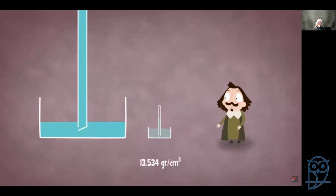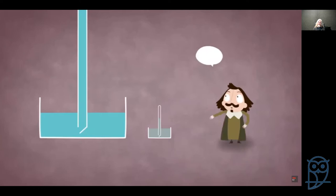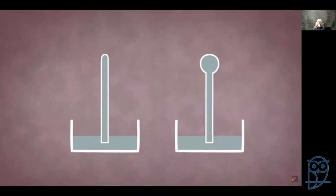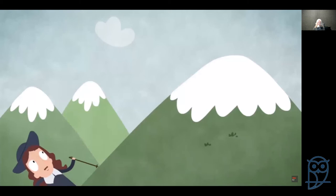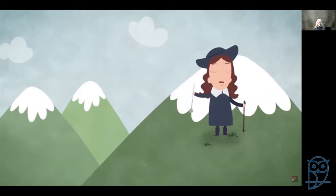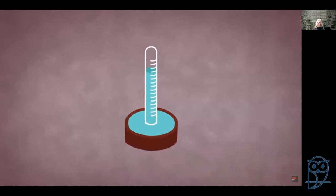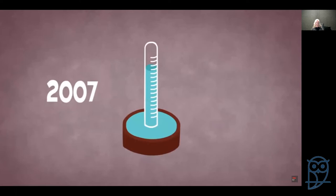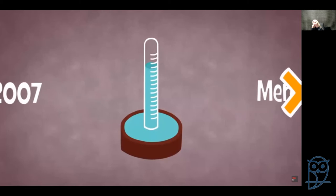Evangelista Torricelli, Galileo's young pupil and friend, decided to look at the problem from a different angle. Instead of focusing on the empty space inside the tube, he asked what else could be influencing the water. Because the only thing in contact with the water was the surrounding air, he believed the pressure from this air was the only thing preventing the water level from dropping further — the experiment was a balance between atmospheric pressure on the water outside the tube and the pressure from the water column inside. The water level drops until the two pressures are equal, which is when the water is at 10.3 meters.